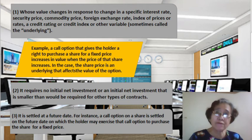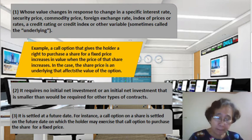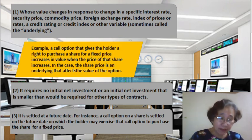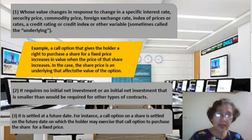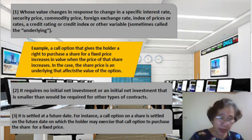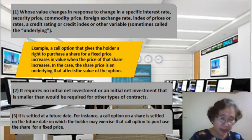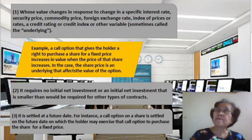Common examples of derivatives include forward contracts, swaps, and options. In the statement of financial position, derivatives are normally measured at fair values. As a general rule, changes in the fair value of derivatives are recognized in profit or loss. However, when the derivative is used to offset risk and special hedge accounting conditions are met, some or all changes in fair values are recognized as a separate component of equity.